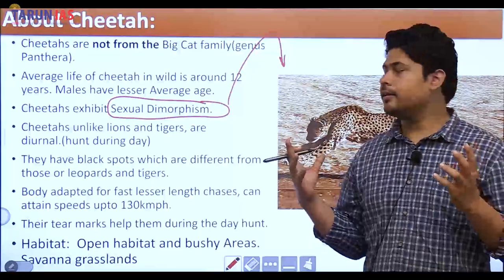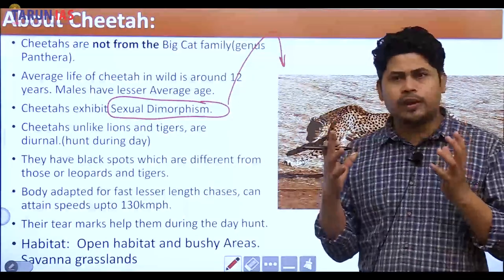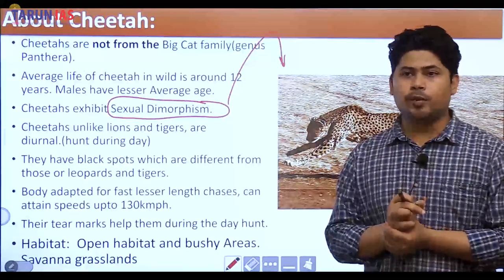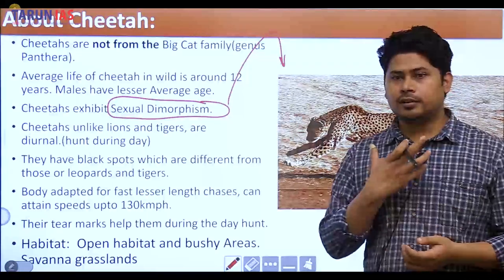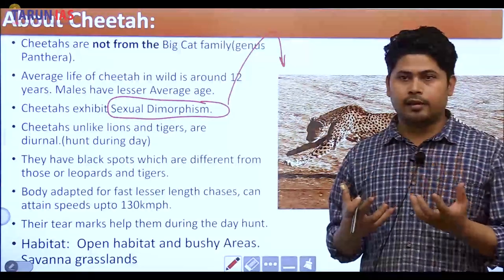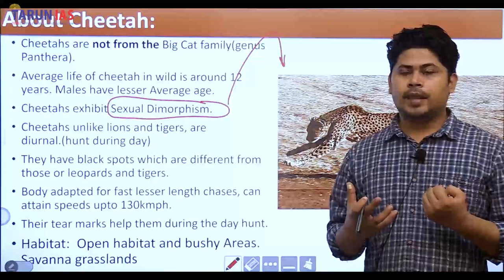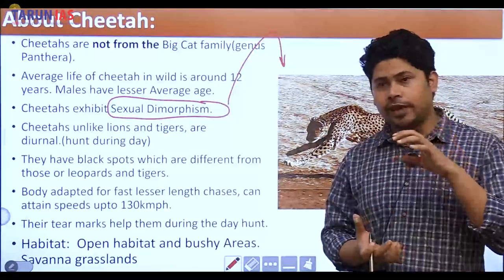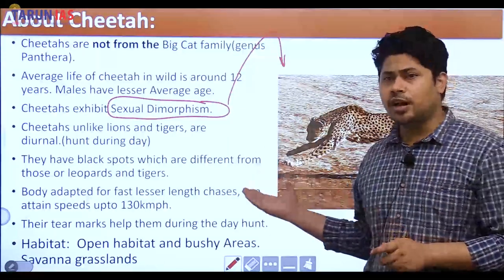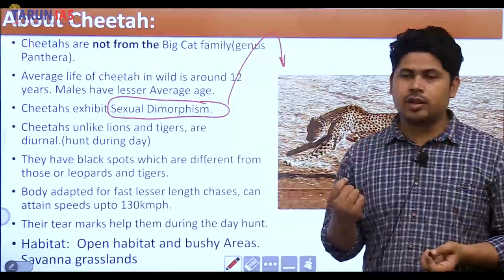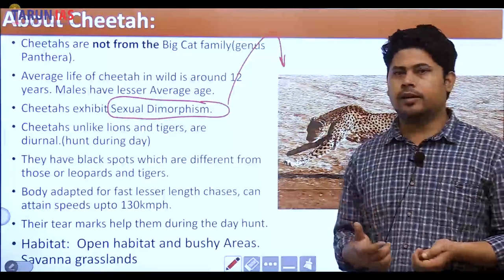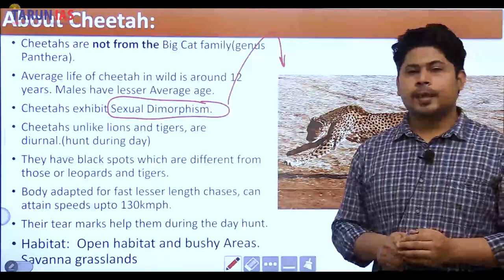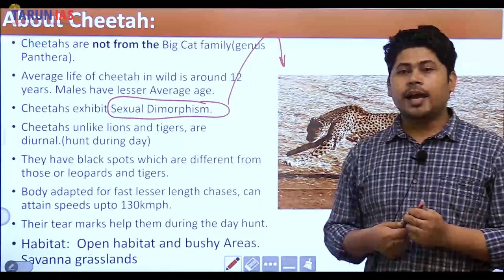In cheetahs, males are taller and have larger heads compared to females, but this is not very prominent compared to lions, where sexual dimorphism is very prominent — for example, male lions have a mane around their chin and females do not, and female size is much smaller. In cheetahs, sexual dimorphism exists but is not so prominent.